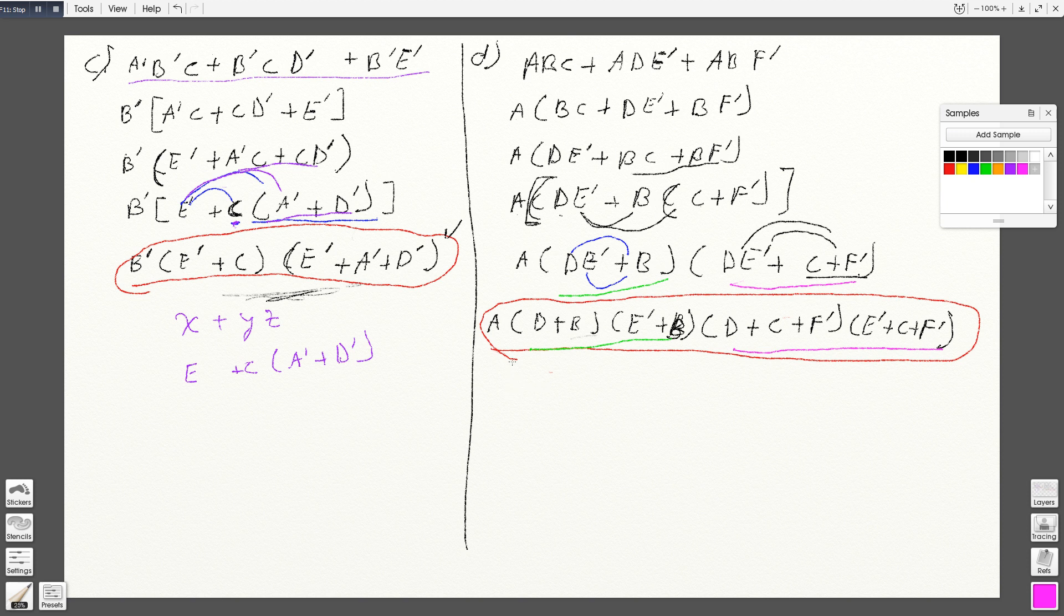Hope this doesn't give you guys any confusion. I'm going to rewrite this so it looks nice. The answer is A times (D plus B) times (E' plus B) times (D plus C plus F') times (E' plus C plus F'). That will be the answer for letter d.